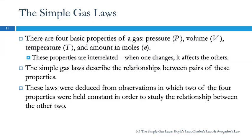There are a number of gas laws, and we're going to talk about a group of them called the simple gas laws. There are four basic properties of a gas: its pressure, indicated with a capital P; its volume, capital V; its temperature, capital T; and the amount of gas, measured in moles, given the symbol lowercase n. These four properties are interrelated — if you change one, one or more of the others will change also. The simple gas laws look at relationships between pairs of properties, just two properties, holding the other two constant.